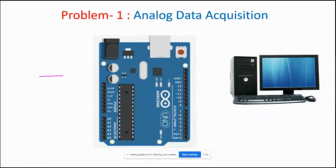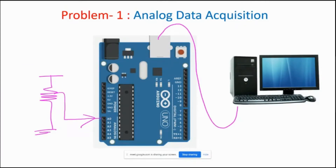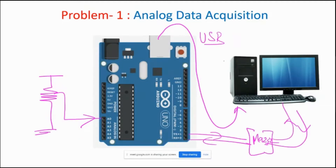The first problem: I connected a potentiometer to analog 0 and then connected my computer via USB. This is a pseudo UART — actual UART requires a MAX chip. In this case we are using pseudo UART and checking it. Either way the code is the same. So that is the first problem.